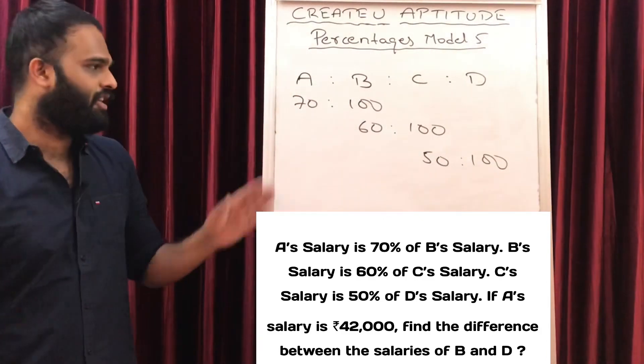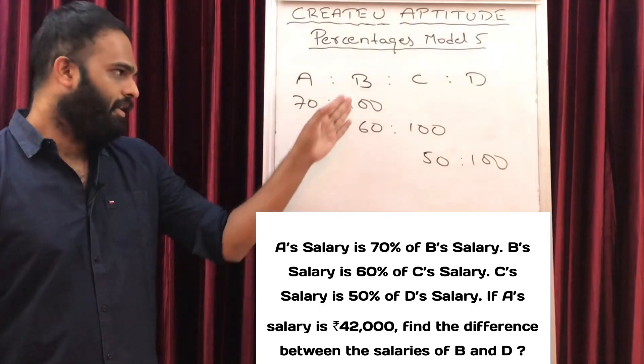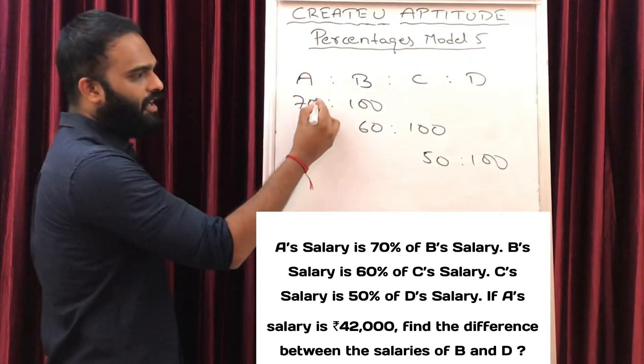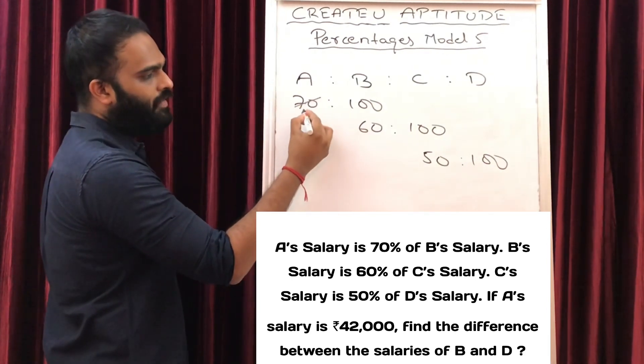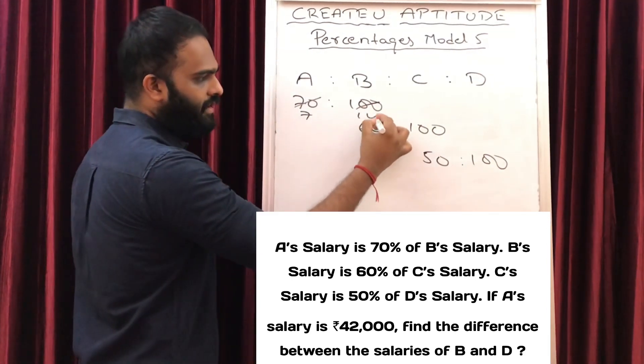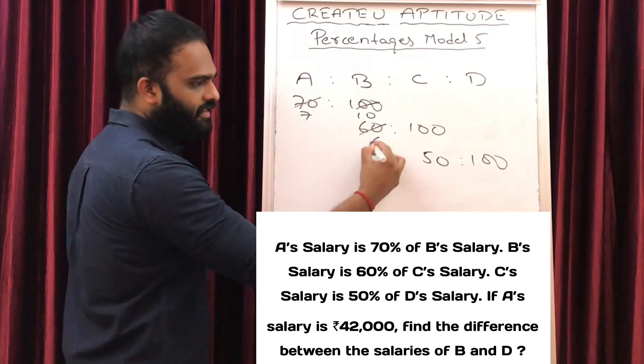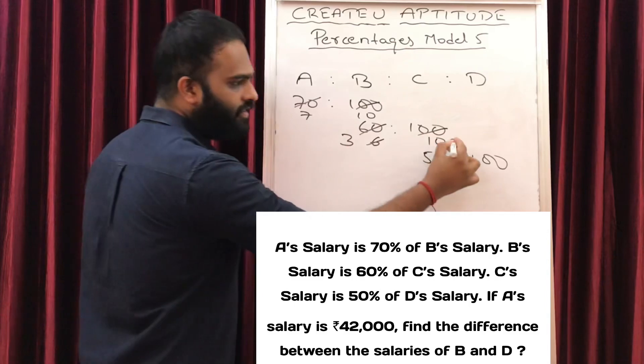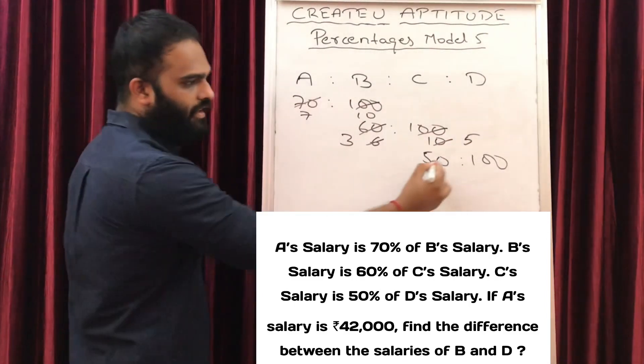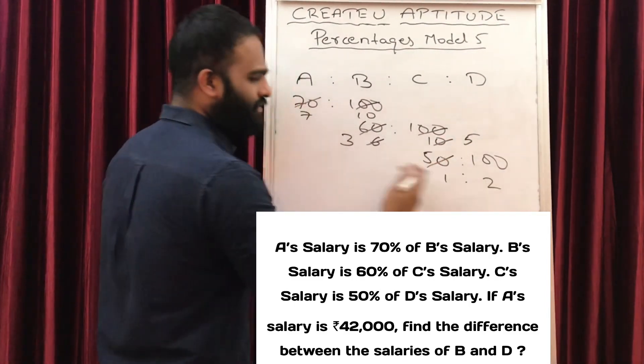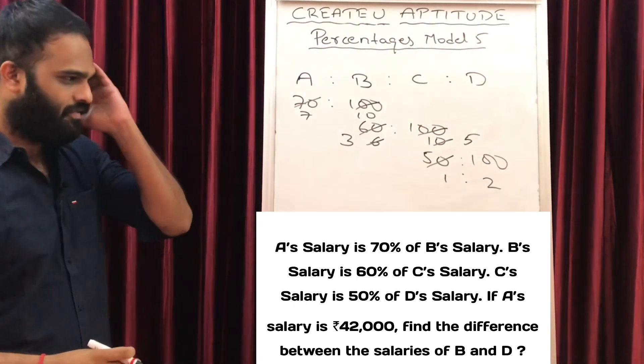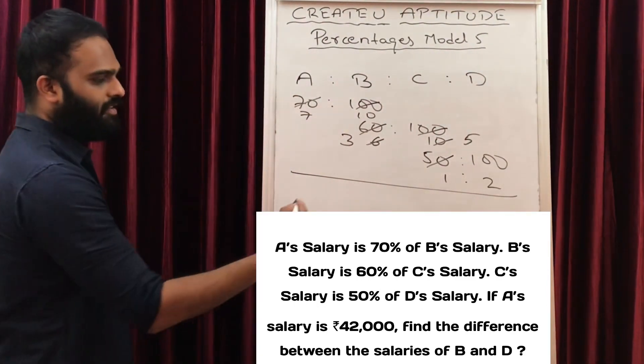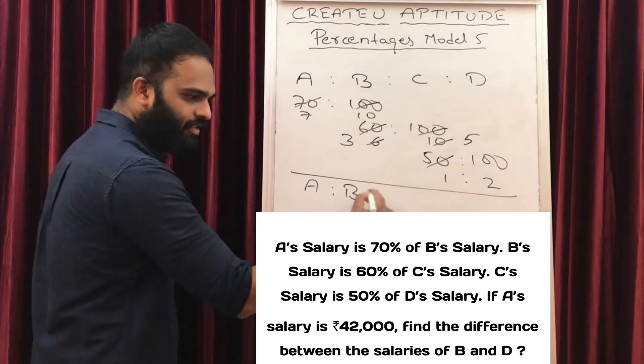If A is 70, B's 100. If B's 60, C's 100. If C's 50, D's 100. This is 7 is to 10, this is 6 is to 10, this is 3 is to 5, this is 1 is to 2, 5 is to 10, 1 is to 2. This is how we need to write A is to B is to C is to D.